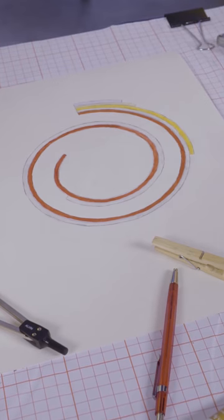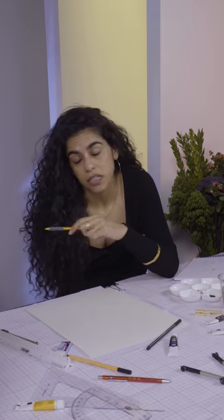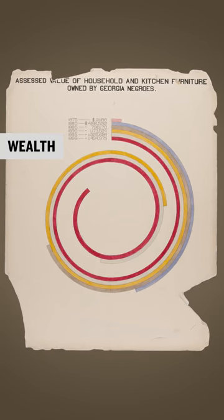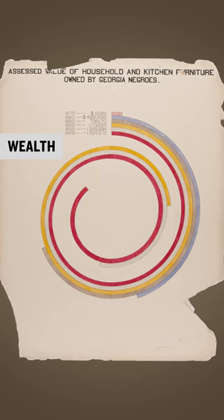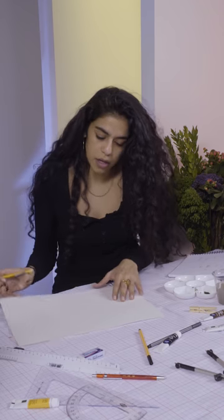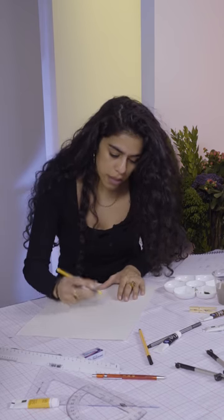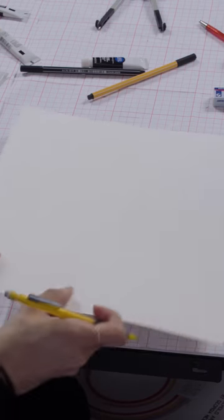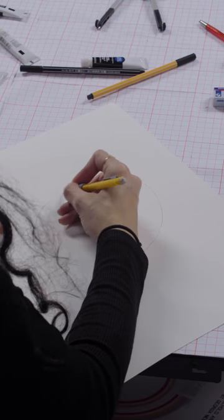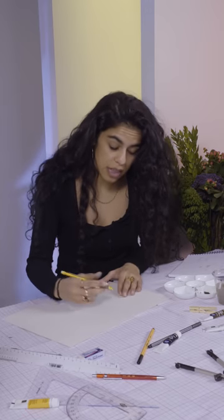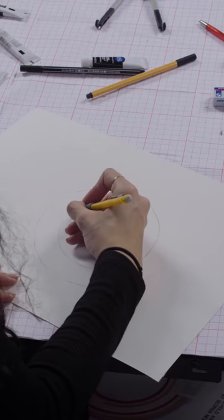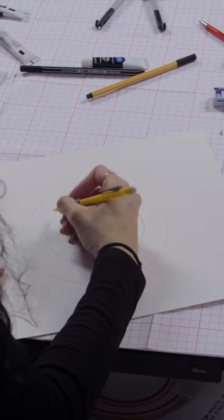This next chart is about household wealth. Du Bois looked at the way that household wealth in Georgia had accumulated over time for African Americans. Instead, I want to look at nationwide statistics and compare them between different racial groups. I am drawing a circle to depict household wealth of white Americans — the number of degrees equals the number of dollars. The median net worth of a white American today is about $110,000, and white people in America have the highest net worth of any racial group.